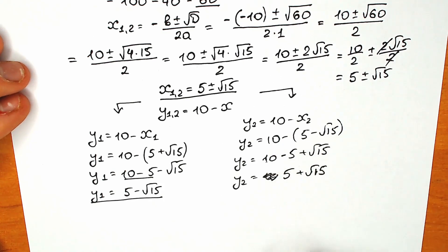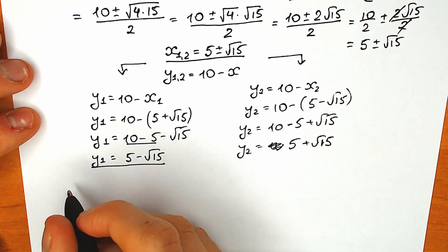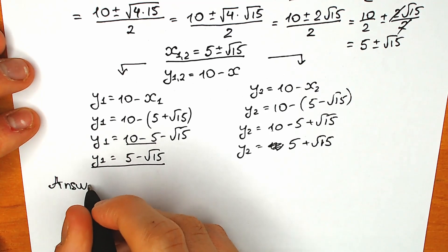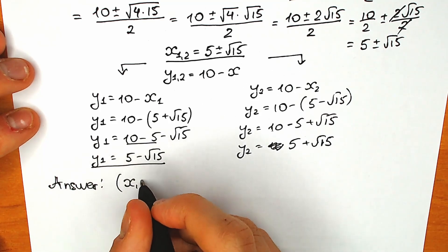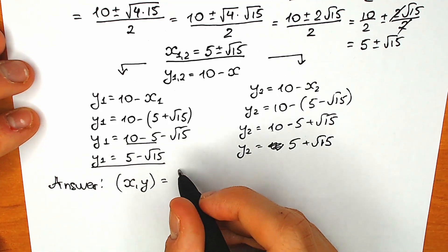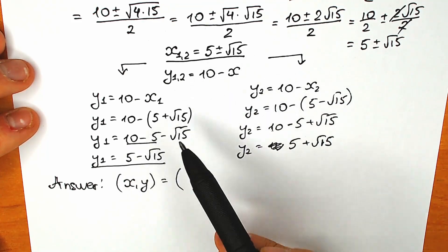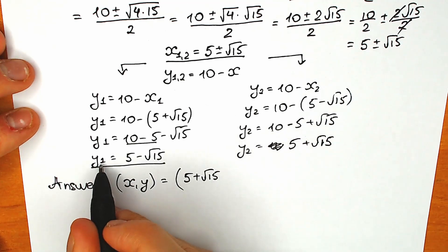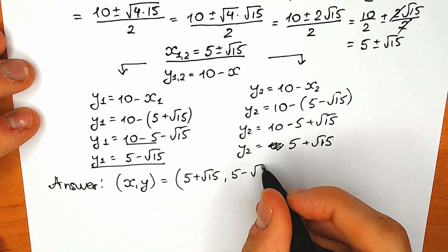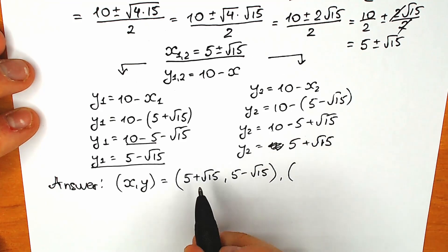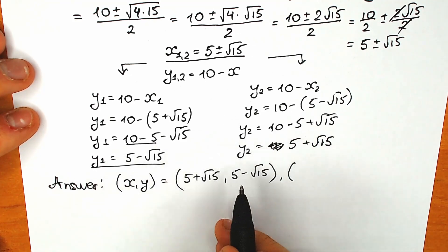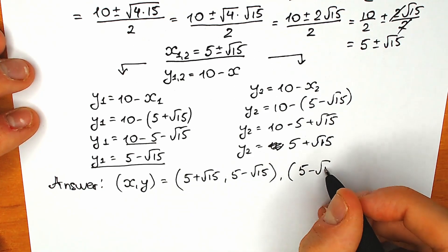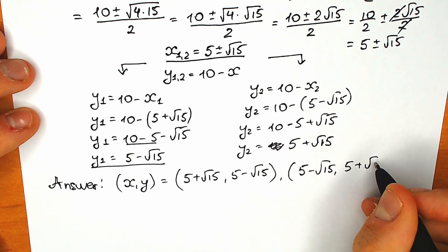Now let's write out both pairs as our answer. We have two pairs. Pair one: x₁ equals 5 plus square root of 15, y₁ equals 5 minus square root of 15. Pair two is symmetrical: x₂ equals 5 minus square root of 15, y₂ equals 5 plus square root of 15.